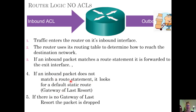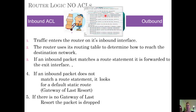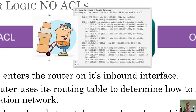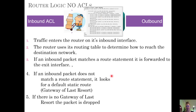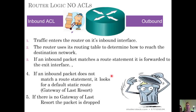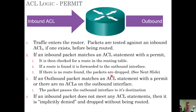What happens if the inbound packet does not match a route statement? This is where our gateway of last resort would come in. As long as there's a gateway of last resort, the packet would go out the gateway of last resort if it didn't match any of the exact routes. If there is no gateway of last resort, that packet would just get dropped.